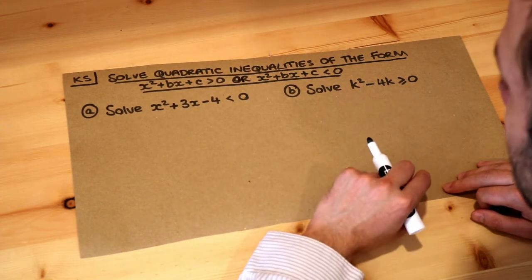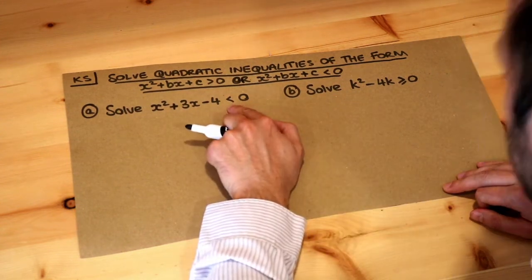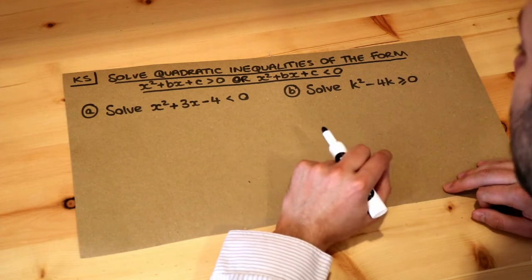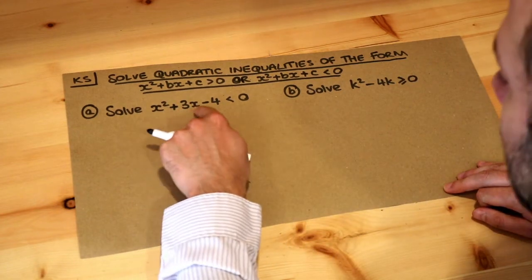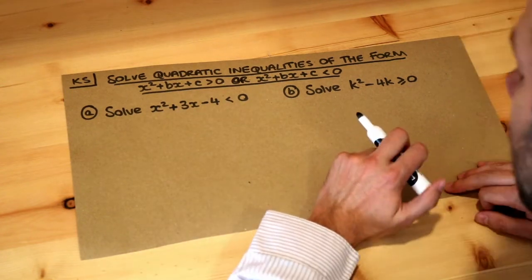So these are quadratic inequalities. They're called inequalities because we've got a less than symbol or greater equal symbol, and they're quadratic because we've got something x squared plus something x plus something. There's an x squared term in here, that's the key thing.